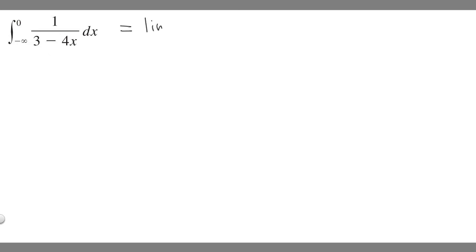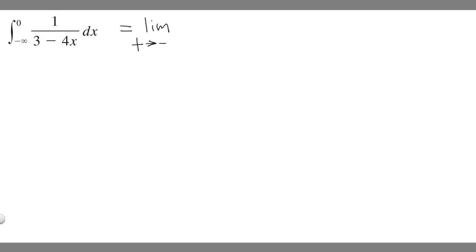So we can say it's equal to the limit, and then you're going to want to choose a variable — it can be any letter you want, so I'm going to choose t. So we're going to say as t approaches... and then what you're going to want to do is look at your bounds. If you have a definite number like zero and then an infinity or negative infinity, you're going to want to say that t approaches whatever it is. In this case, we have a negative infinity, so we say t approaches negative infinity.